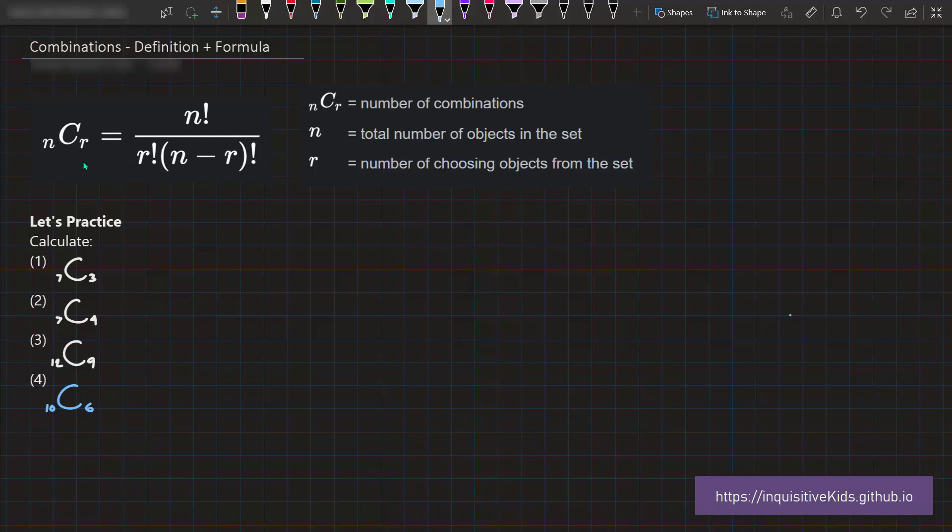Combinations are written in the form of nCr, similar to how we write permutations as nPr, except that the big letter in the middle is swapped into a C for combinations. But what is exactly an example of a problem that would use combinations?